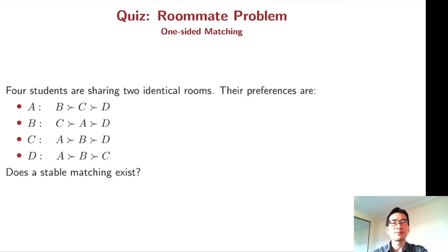This is another class of matching problem, namely a roommate problem. Students are sharing two identical rooms. So each student has a preference over other students but not over rooms. The marriage problem is a two-sided matching because there are two sides, man and woman. But this roommate problem is called a one-sided matching. Please try to find a stable matching in this problem.